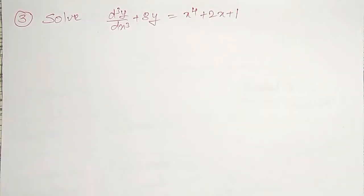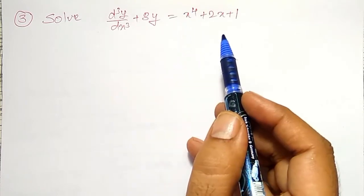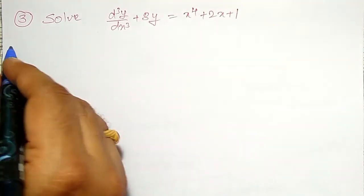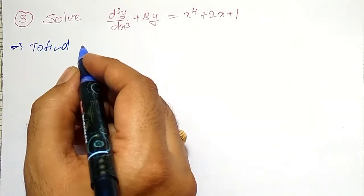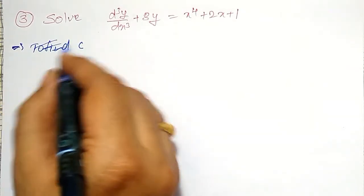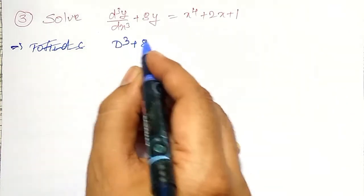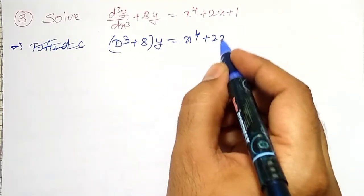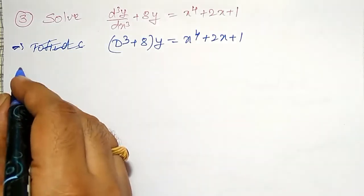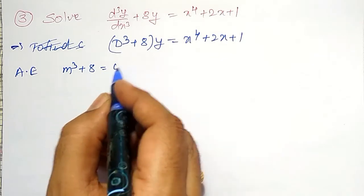Another simple example to find the complete solution of the non-homogeneous differential equation where the PI is of polynomial type. Here first, to find the CF, I will use the differential operator. The equation is d³ + 8, times y, equal to x⁴ + 2x + 1. The auxiliary equation is given by m³ + 8 = 0.